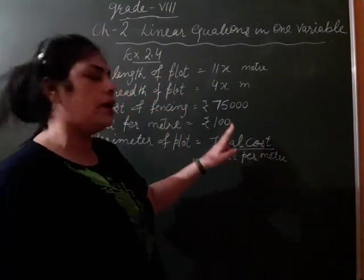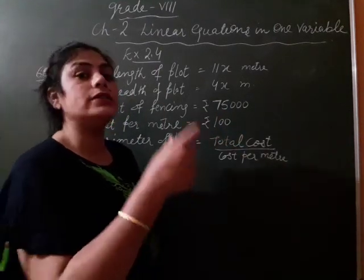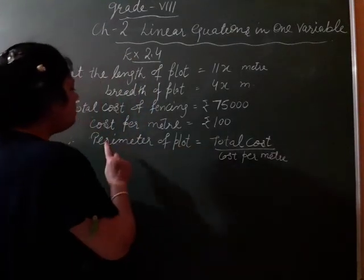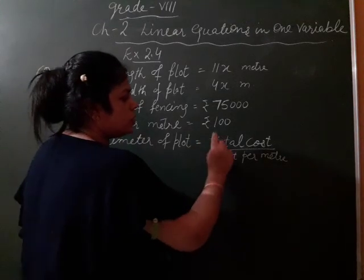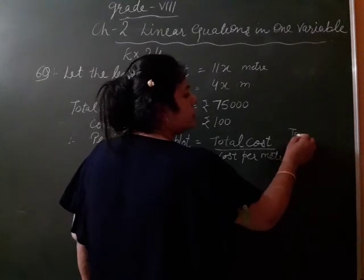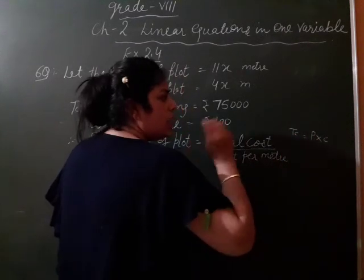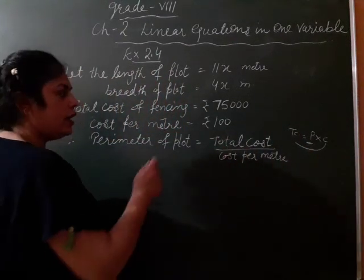Now, you have given total cost and cost per meter. So, we have to calculate its perimeter. So, perimeter of plot kya banega? Total cost divided by cost per meter. When we find total cost, we do perimeter multiply cost per meter. When we find perimeter, cost per meter divide ho jayegi.